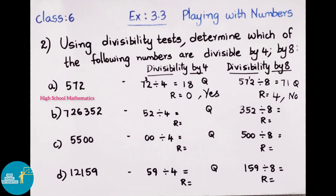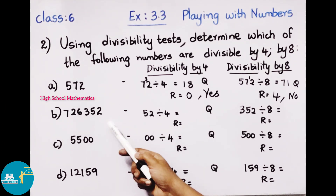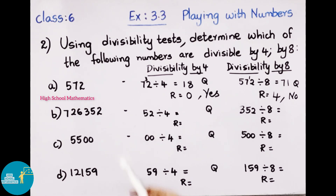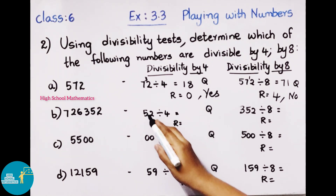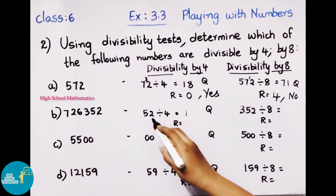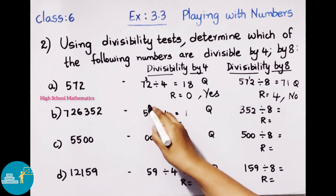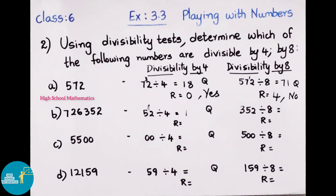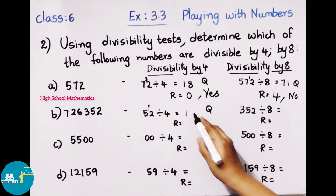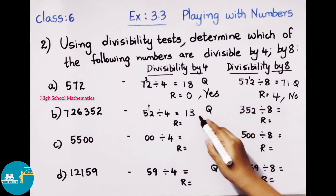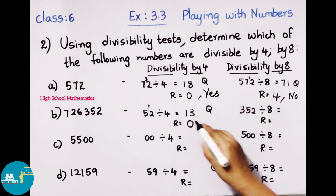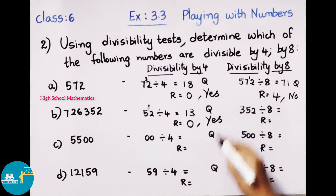Next number: 7,26,352. To check divisibility by 4, take the last 2 digits: 52. Dividing 52 by 4: 4 times 1 is 4; 5 minus 4 gives remainder 1. So 52 is not perfectly divisible by 4, meaning 7,26,352 is not divisible by 4.